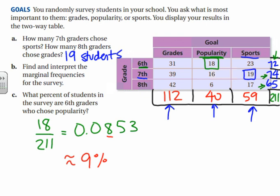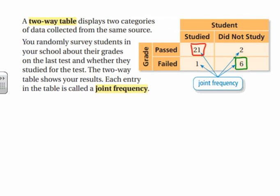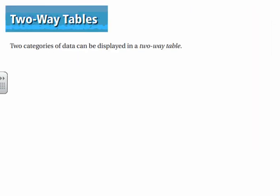Hopefully that helps you understand two-way tables a little better. Make sure you know what a joint frequency is and what a marginal frequency is. Thanks for watching.